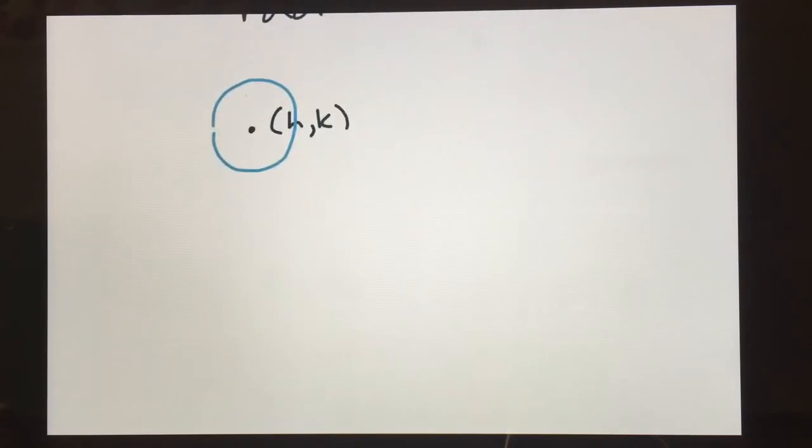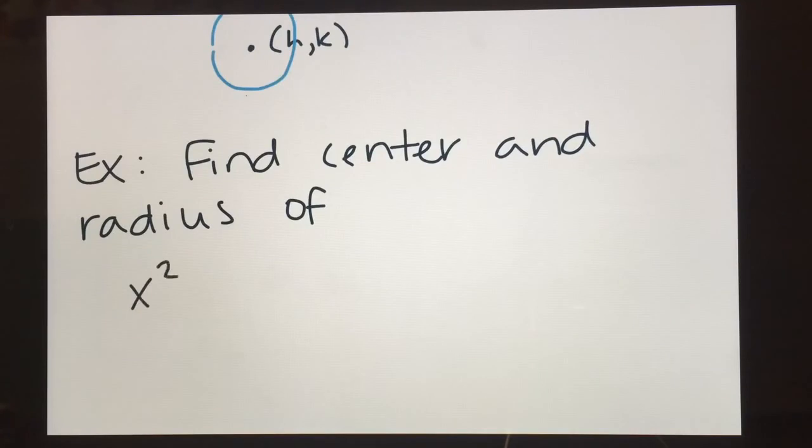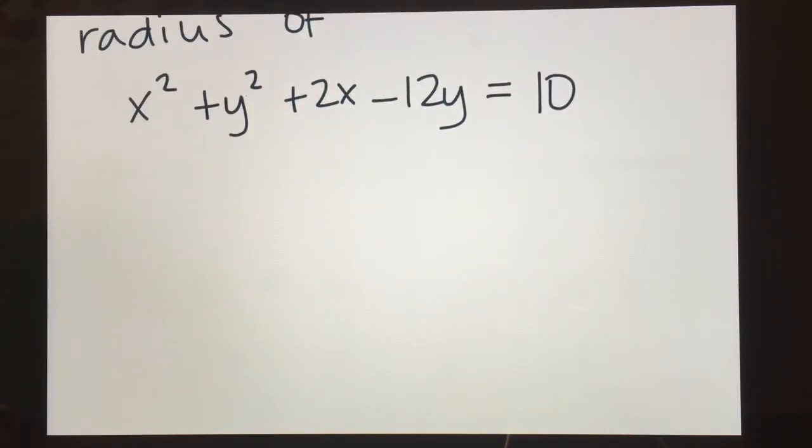All right. So let's say, for example, we're doing a problem and they're asking us to find the center and the radius. So for example, find center and radius of x squared plus y squared plus 2x minus 12y equals 10. So obviously this equation does not look anything like it should. So basically what I'm going to do is I'm going to separate the x's from the y's. And then we're going to complete the square to get it in the form that we like.